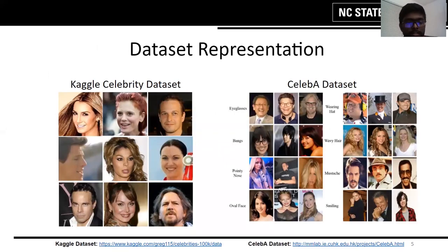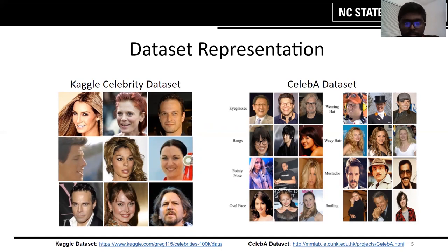This is the dataset which we used. On the left, you can see the Kaggle celebrity dataset, which is a subset of the CelebA dataset. The CelebA dataset contains around 200,000 images with over 40 annotations like eyeglasses, bangs, face, smiling, and mustache. For our project, we just need faces. Hence, this Kaggle CelebA dataset was generated from the CelebA dataset by cropping the faces. This Kaggle CelebA dataset has around 100,000 images which we used for our project. Now Bhavatra will take over the presentation.